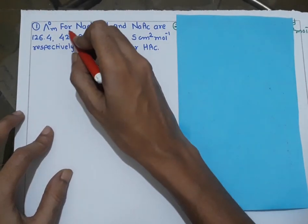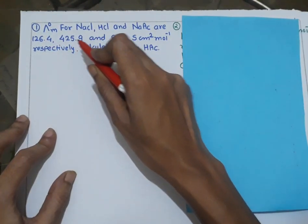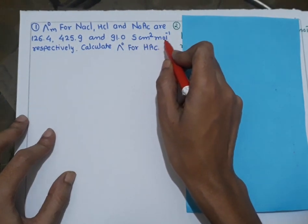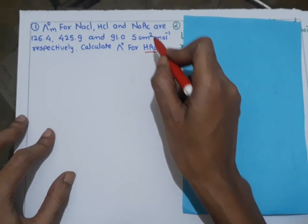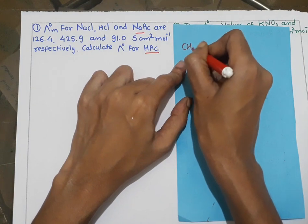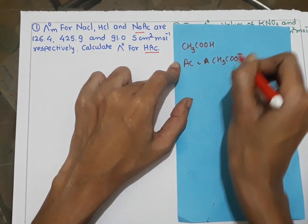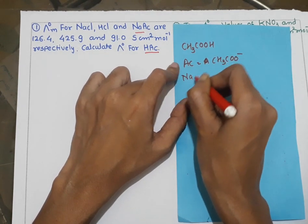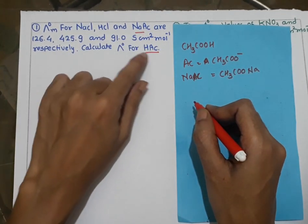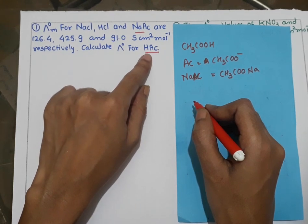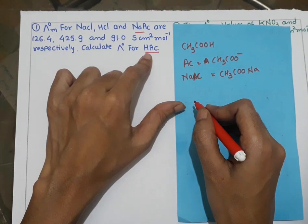Let us solve a numerical for limiting molar conductivity. The limiting molar conductivities of NaCl, HCl, and NaAc are 126.4, 425.9, and 91.0 Siemens centimeter square per mole inverse respectively. Calculate lambda naught for HAc. Here HAc is acetic acid, where Ac means the acetate ion CH3COO minus. NaAc is sodium acetate, CH3COONa. HAc is a weak acid while NaCl, HCl, and NaAc are strong electrolytes.